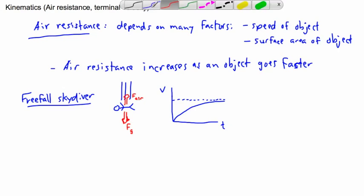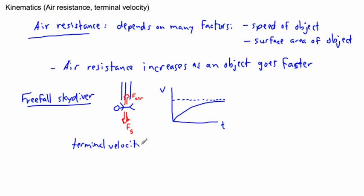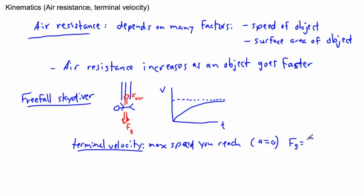At this very special time on the graph, this is what we call terminal velocity — the maximum speed you reach. The acceleration is zero because the gravitational force equals the air resistance force. When those two arrows are the same length, you're no longer accelerating and you're moving at constant speed. We call that maximum speed vt, for terminal velocity.